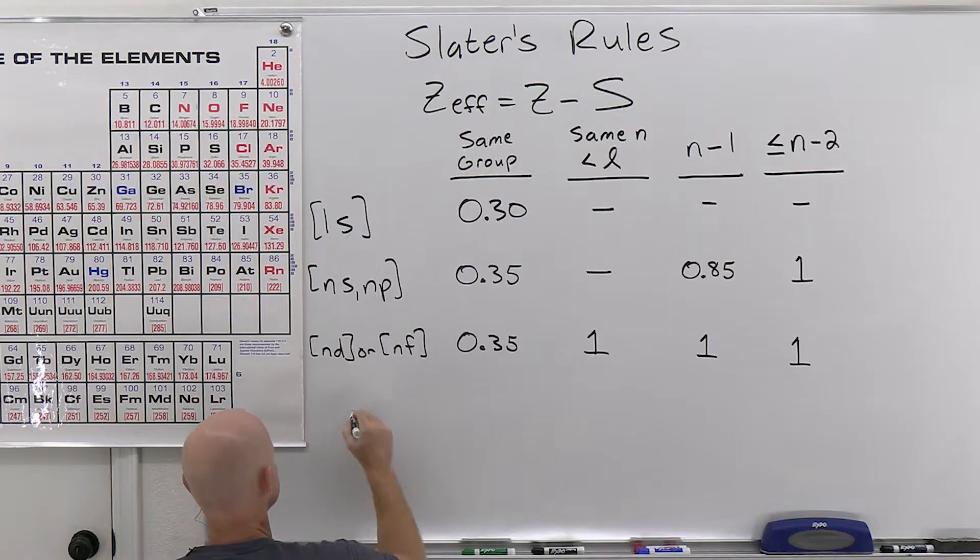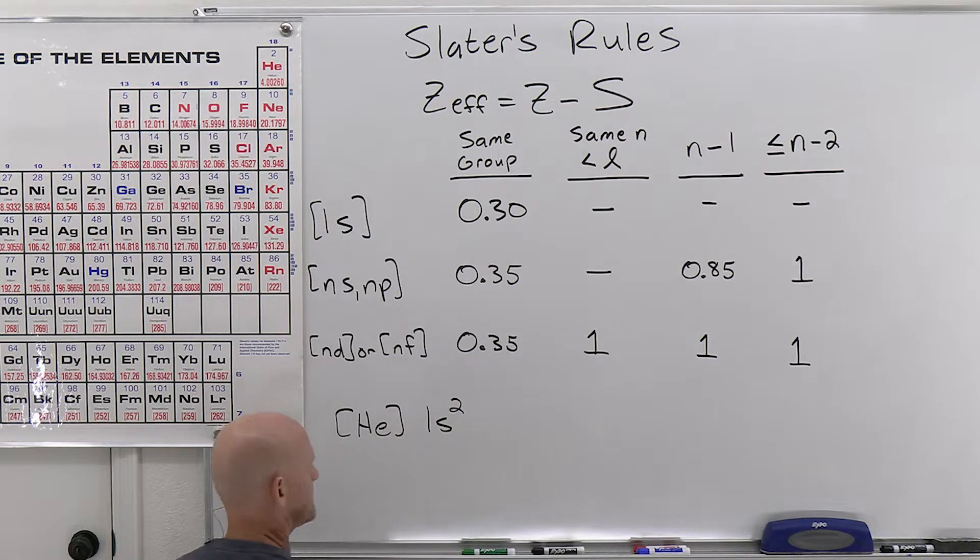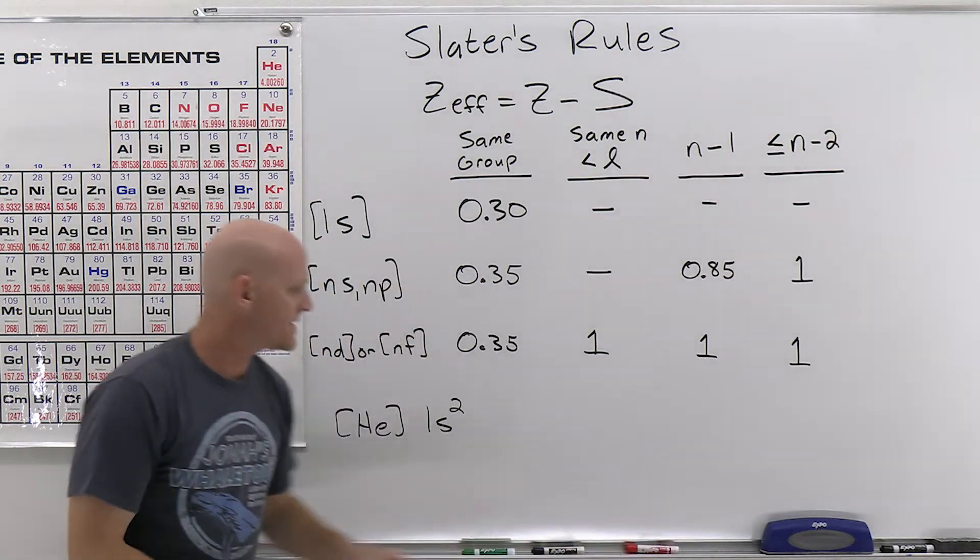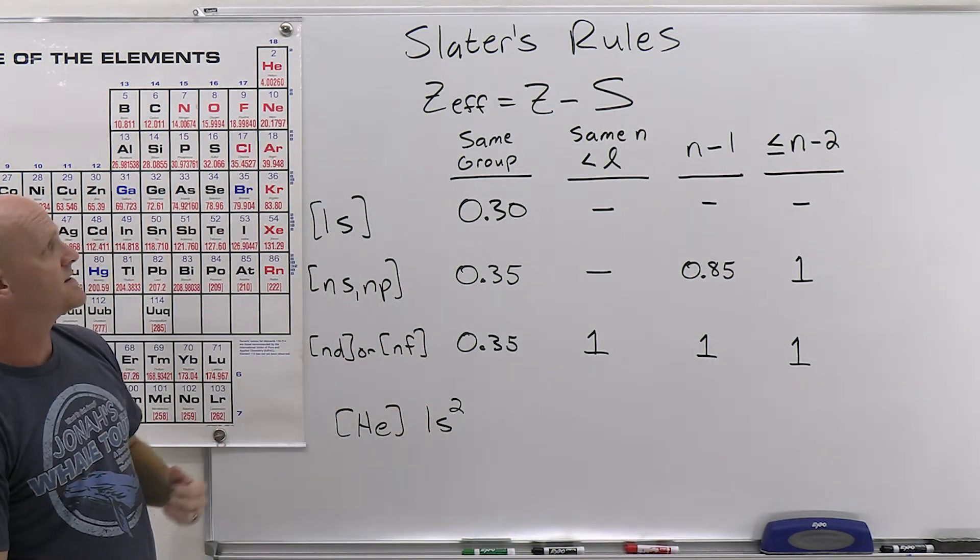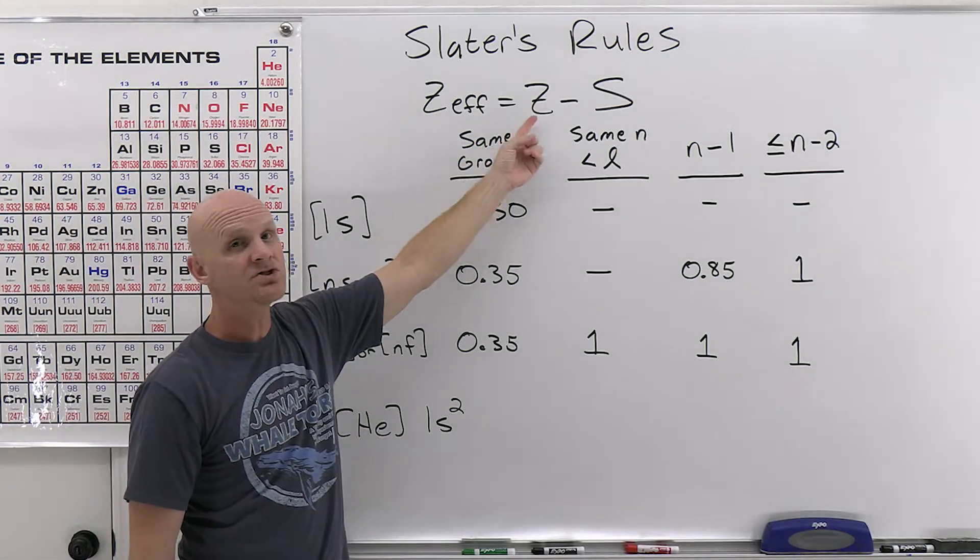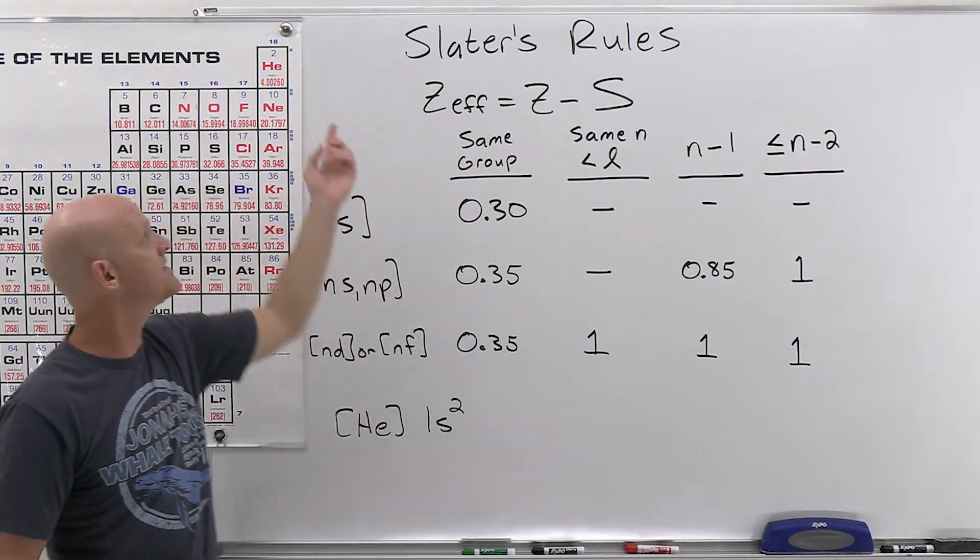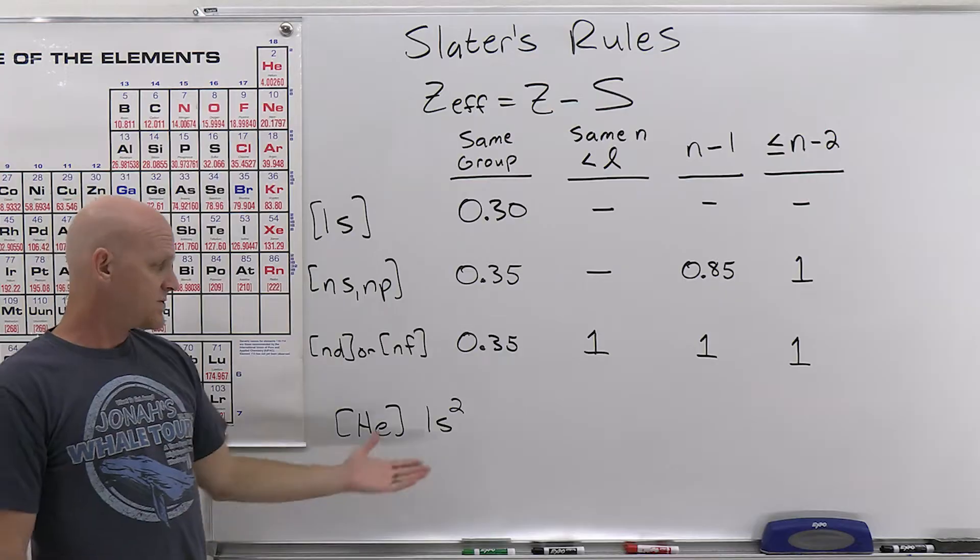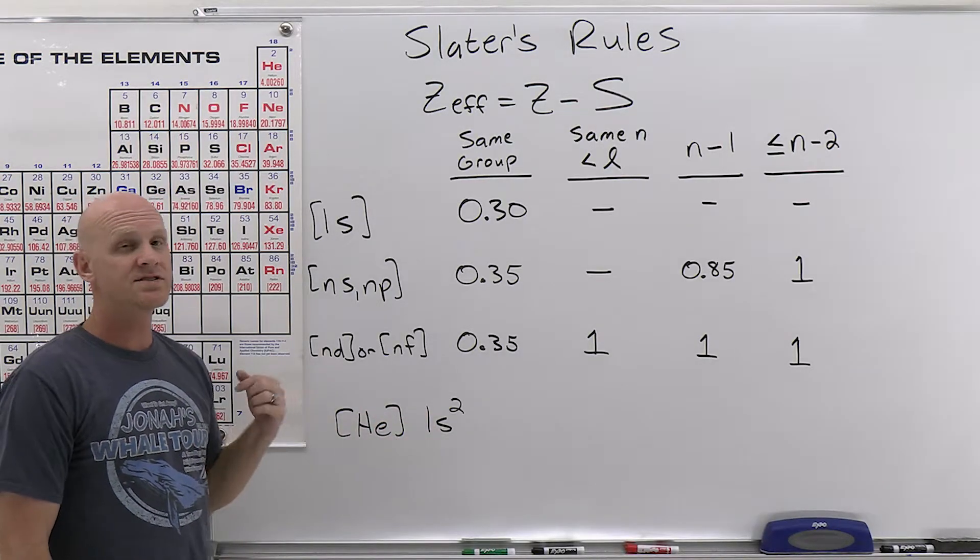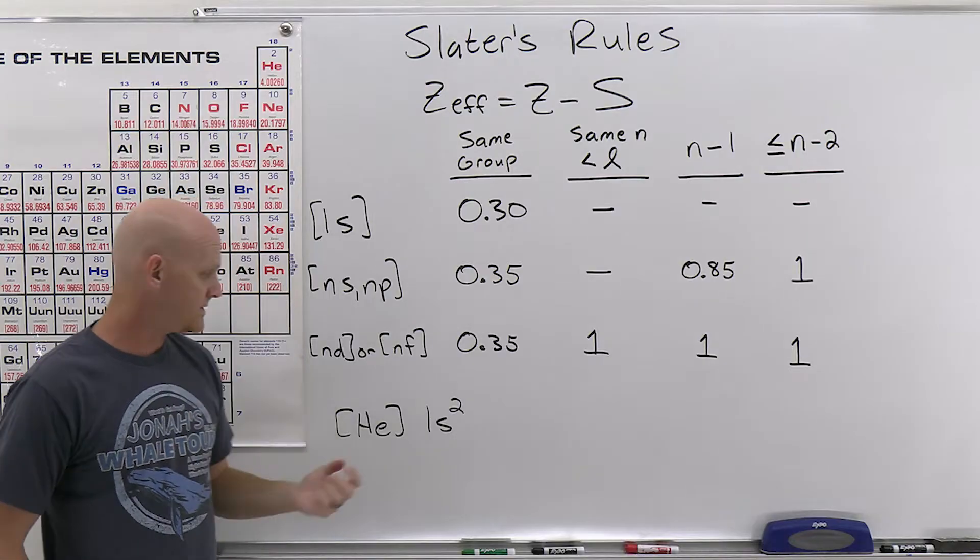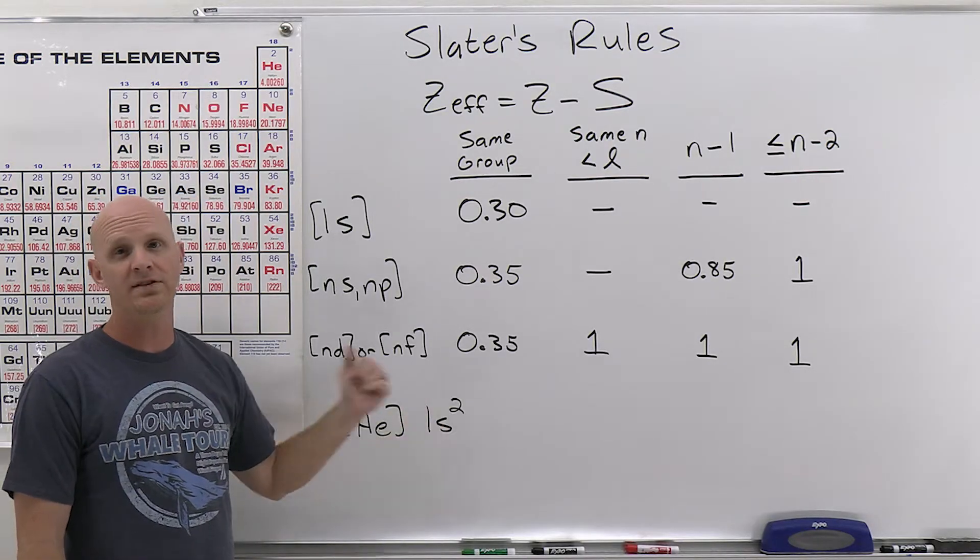So we're going to start with helium first. And helium has just simply got an electron configuration of 1s2, total of two electrons. It's got a z value, the nuclear charge of two, same as the number of protons in the atomic number. And so in this case, what you want to do to calculate out this new screening constant is you have to decide which electron you're going to do this for. Well, the only electrons it has are two 1s electrons.